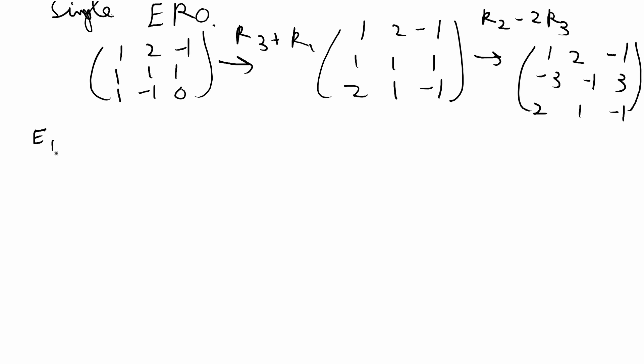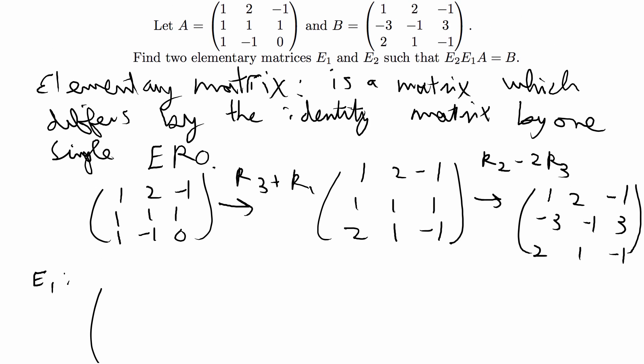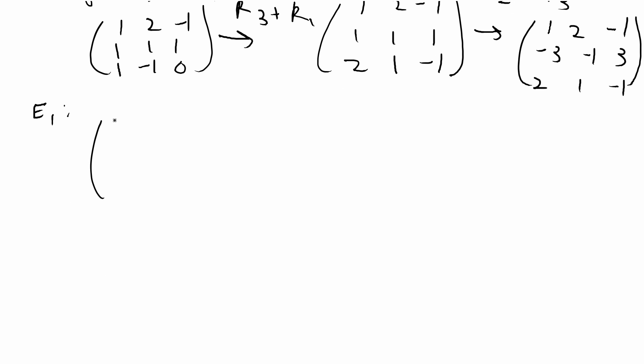To find the first elementary matrix, we're going to take a 3x3 identity matrix. We're using 3x3 because we are given 3x3 matrices, so we know that the identity has to be a 3x3 matrix. We're going to perform the same elementary row operation that we did the first time for A. So that's R3 plus R1, and that gives 1, 0, 0, 0, 1, 0, and then 1 plus 0 is 1, 0 plus 0 is 0, and 1 plus 0 is 1. So that is equal to the first elementary matrix, E1.